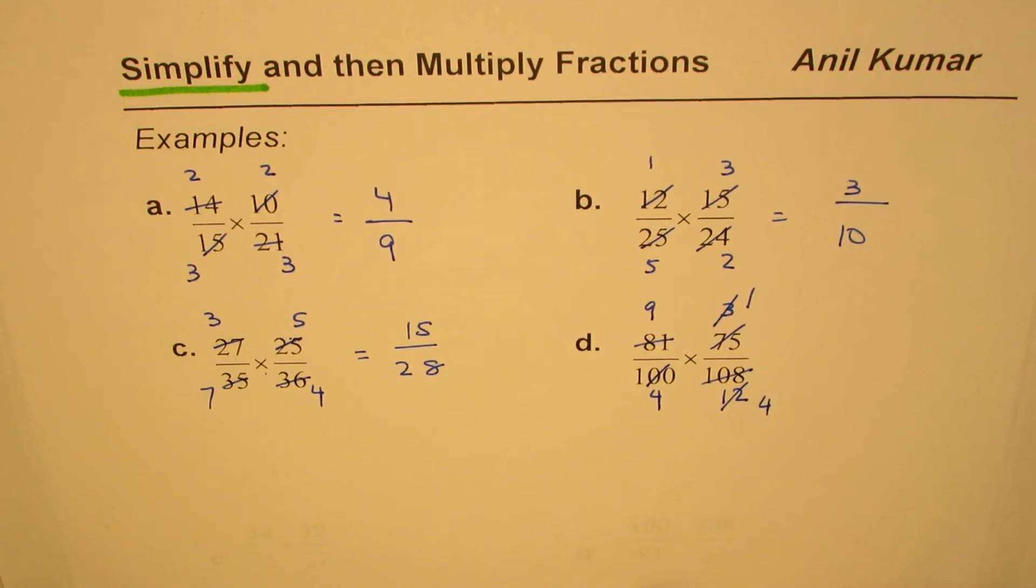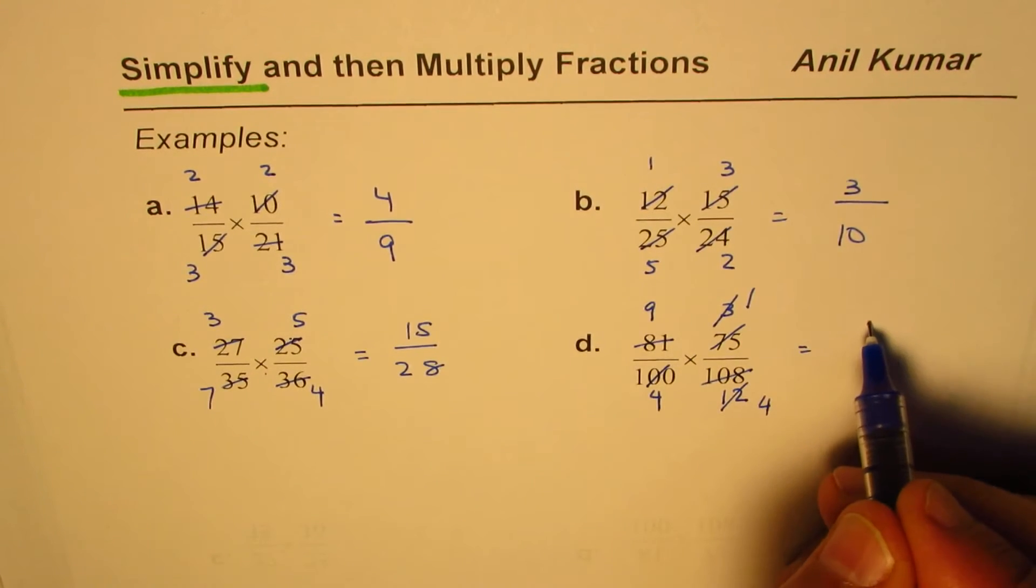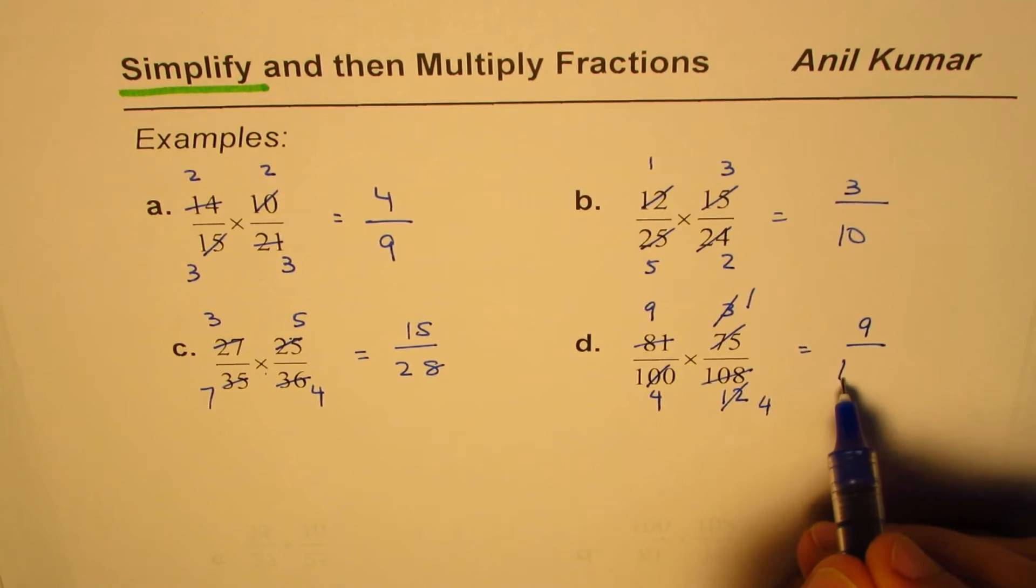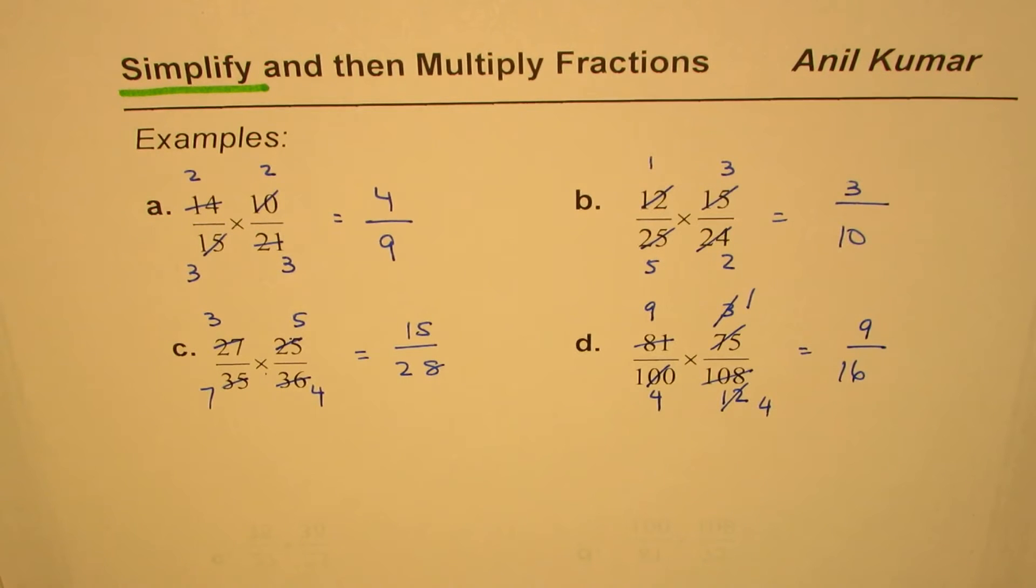And now 9 times 1 is 9, 4 times 4 is 16, so we get our final result as 9 over 16. I hope with this you must have got a feeling that it is not that difficult to multiply fractions if you simplify them first.